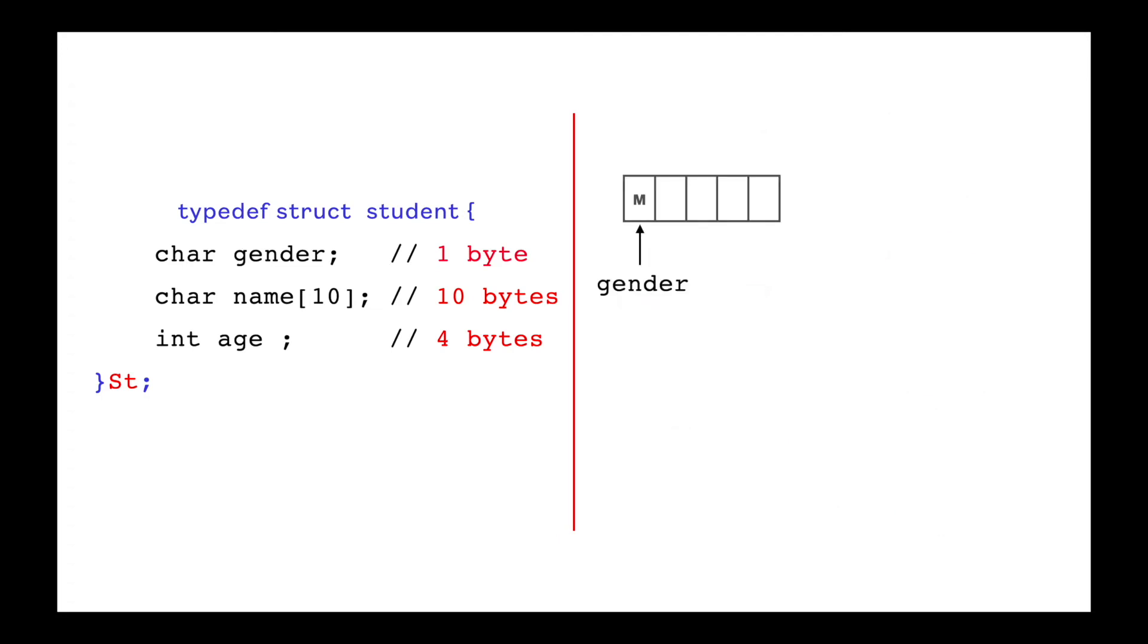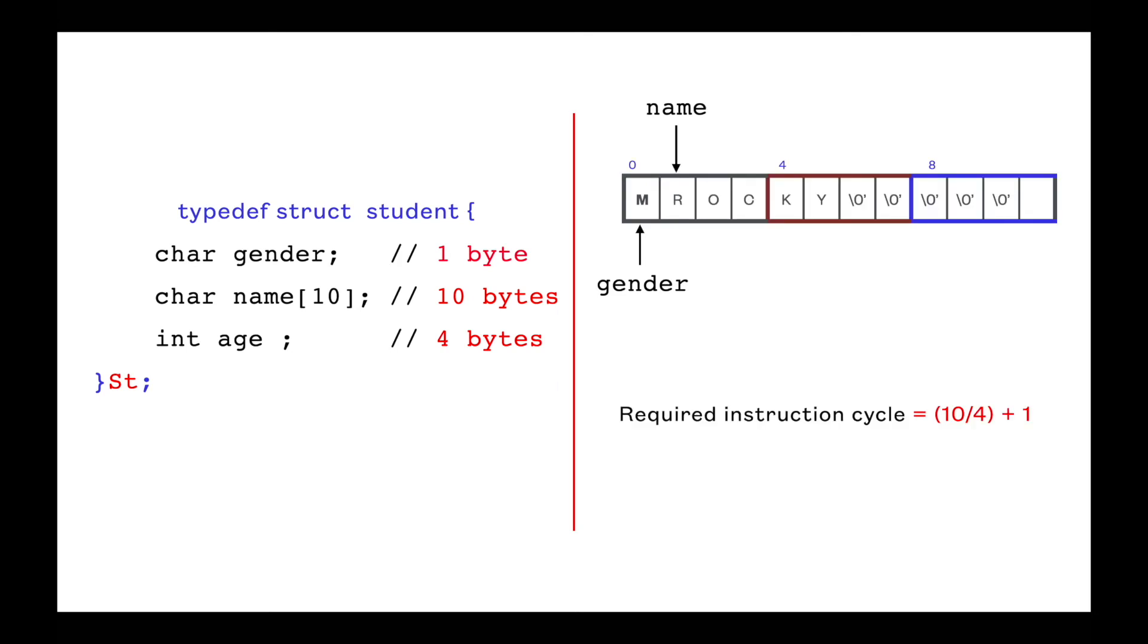First element gender size is 1 byte, which can be fetched in one instruction cycle. So 1 byte of memory will be allocated for this. Second element name size is 10 bytes, which can fetched in 3 instruction cycle. So next 10 bytes will be allocated for name. So as of now we have total of 11 bytes allocated, and these 11 bytes can be fetched in 3 instruction cycle. Means we can read gender and name in 3 instruction cycle.